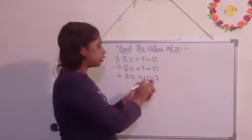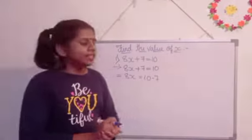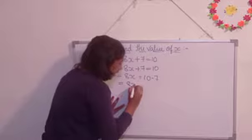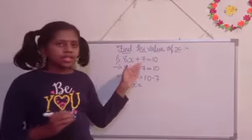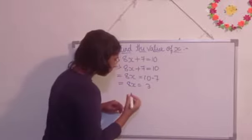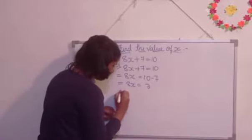So we wrote 8x is equal to 10 minus 7. Next, we are going to write 8x is equal to 10 minus 7, which is 3. So, 3. Here, is equal to.